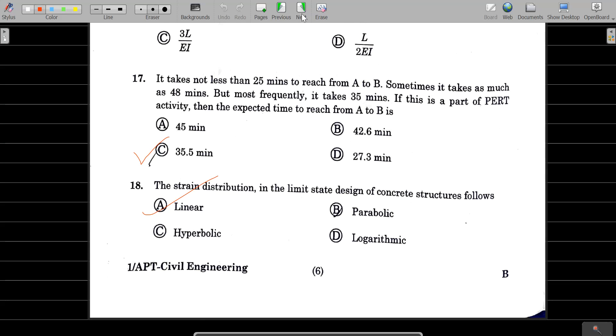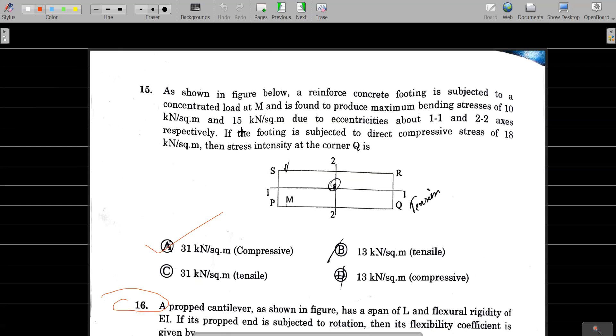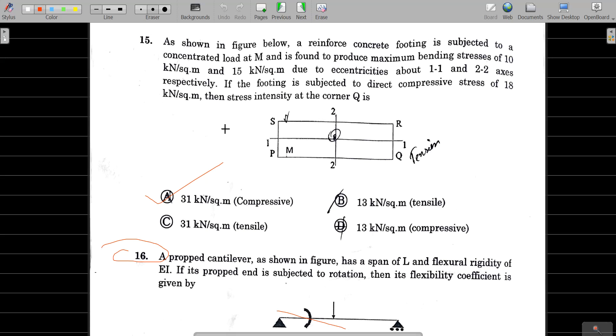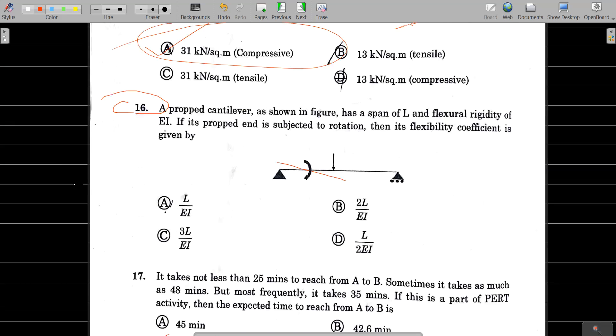Next question: If S is the length of the subchord and R is the radius of simple curve, the angle of deflection between tangent and subchord in minutes is equal to 1718.9 S by R. Question number 15: reinforced concrete footing subjected to concentrated load. When you solve for the section stress intensity at the corner, you will get 31 kN per square meter.